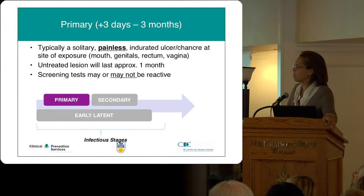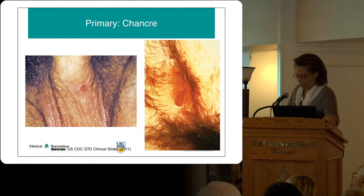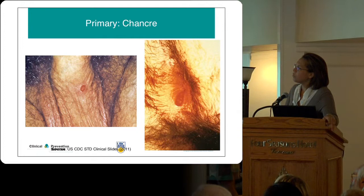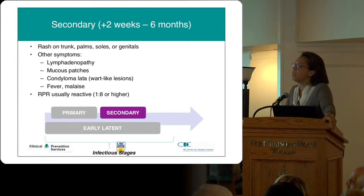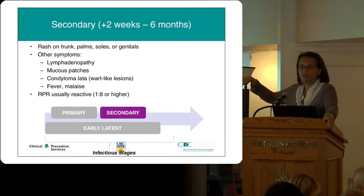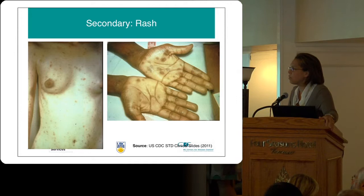Secondary syphilis usually presents with the classic rash on the trunk, palms, soles, or genitals, but we also see lymphadenopathy, condylomata lata, fever, and malaise. Usually by this time the RPR is reactive at about 1:8 or higher. The pathognomonic rash on the palms and soles of the feet is classic, but can also be distributed throughout the body.